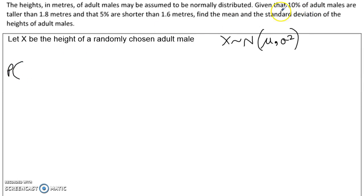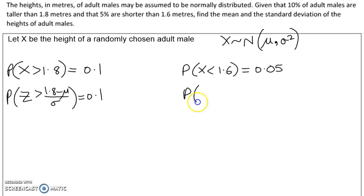We've been told 10% of adult males are taller than 1.8, so the probability x is greater than 1.8 is 10%. And the other piece of information is that 5% are shorter than 1.6. Let's standardize these. We'll go from x to using z instead - take the mean, divide by the standard deviation, and same over here.